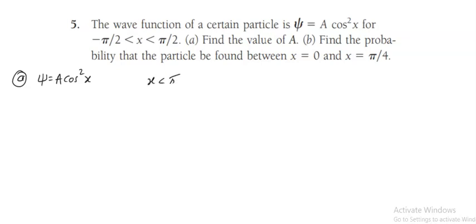Where x is from minus pi by 2 to plus pi by 2. To find the normalization constant, we have to integrate the given wave function from minus pi by 2 to plus pi by 2. The region is given, so psi star into psi dx is equal to 1.